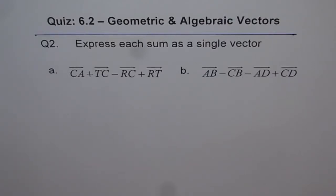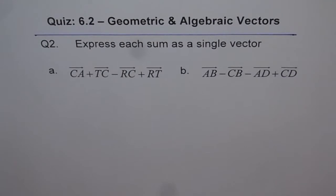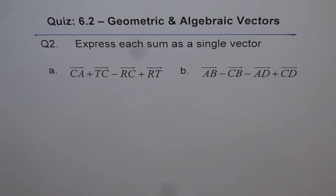Question 2 of Quiz 6.2 Geometric and Algebraic Vectors: Express each sum as a single vector. Part A is CA plus DC minus RC plus RT, and Part B is AB minus CB minus AD plus CD.